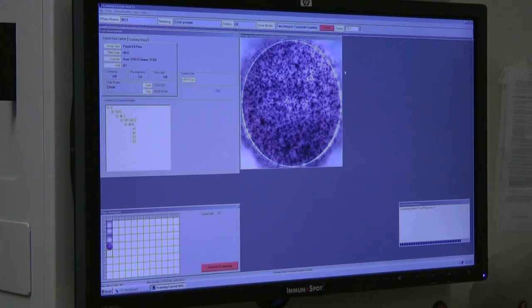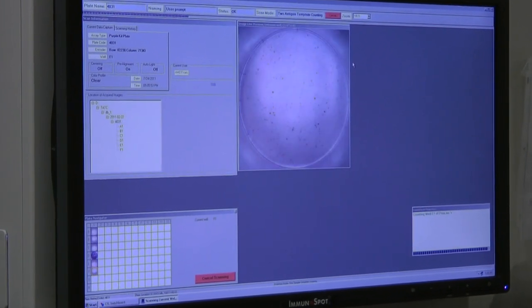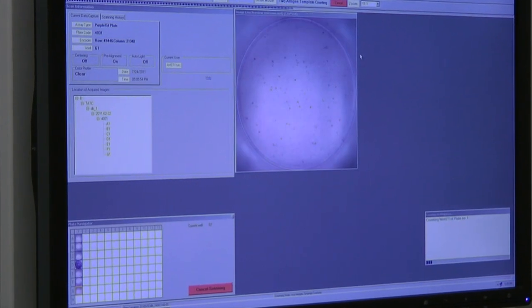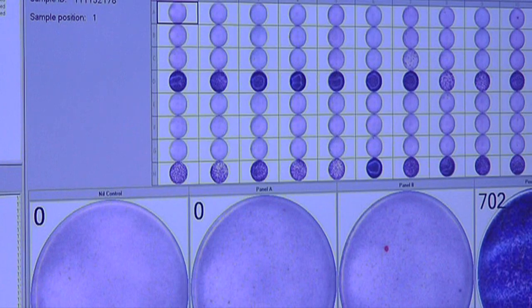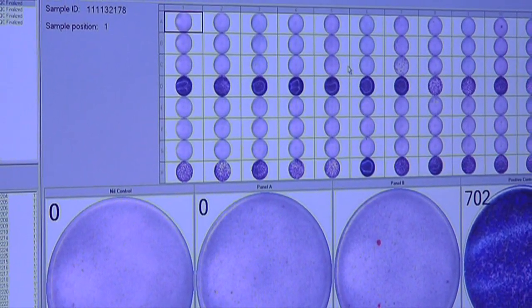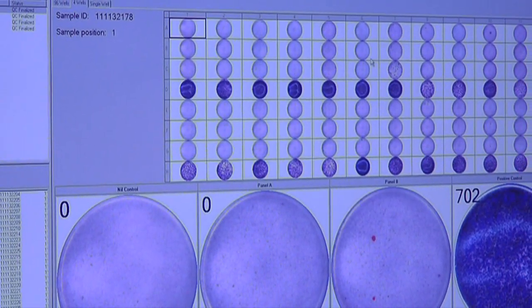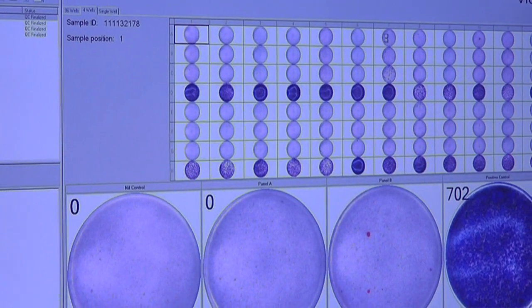This is done by capturing interferon gamma in the vicinity of T-cells purified from whole blood. This video will cover the pre-analytical, analytical, and post-analytical test processes and demonstrate how laboratories can improve sample throughput through a suite of automation.